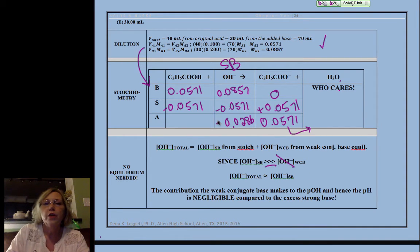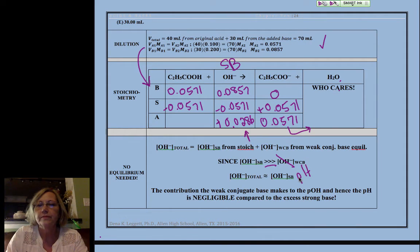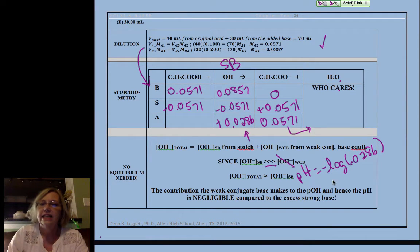That we're going to neglect this altogether. So instead, we're going to get our pOH directly from this value right here. And so pH will be equal to minus the log of our 0.0286.